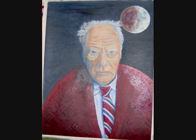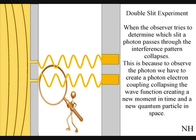When the observer turns on a detector to determine which slit a photon passes through, the interference pattern collapses. At that moment in time, the interference pattern disappears, because to observe the photon, we have to create a photon-electron coupling, collapsing each wave-front into a new quantum particle that will have its own position in space and time.